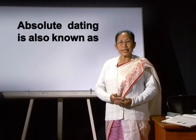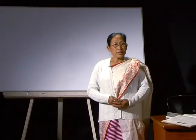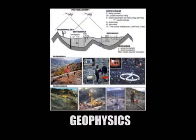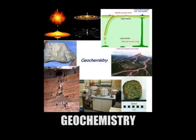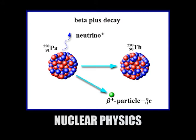Absolute dating is also known as chronometric dating. It is primarily sought to facilitate time sequence in terms of years. It provides the actual time span of a site sequence with close approximation. Absolute dating usually demands high technology laboratory and hence it is costly. It also demands the help of scientists like geophysics, geochemistry, astronomy, nuclear physics, etc.